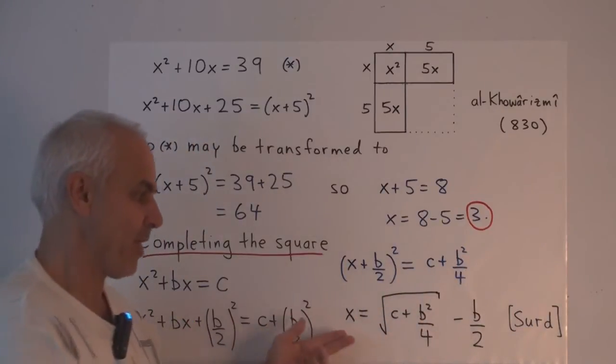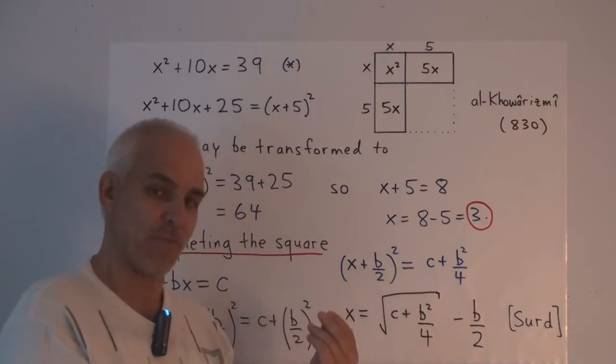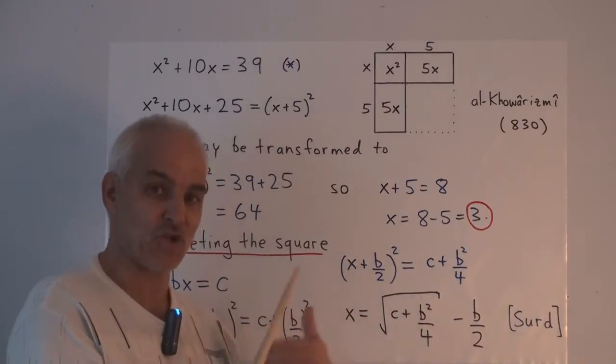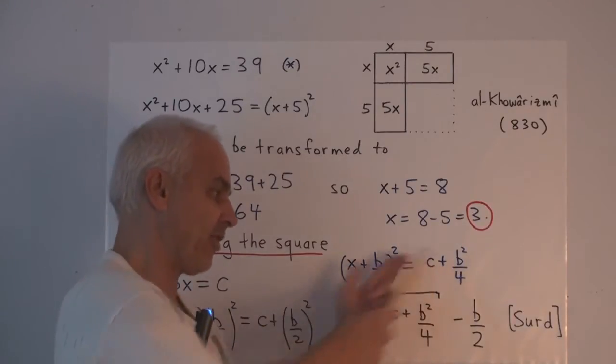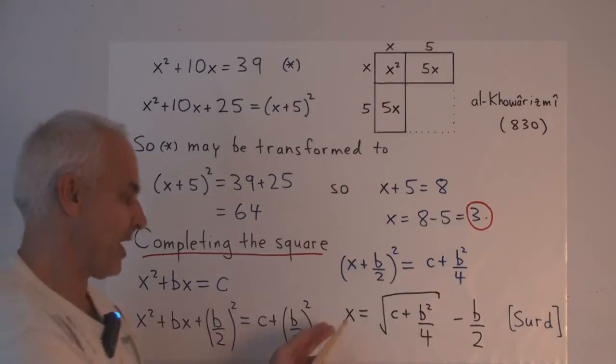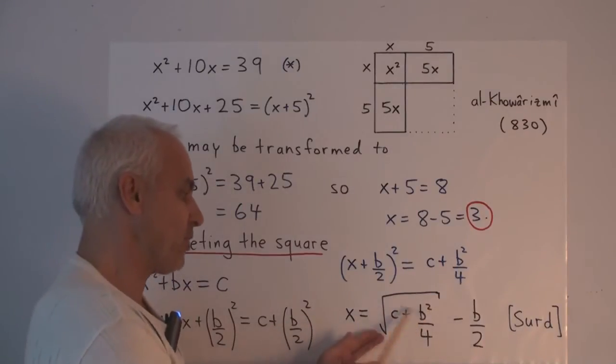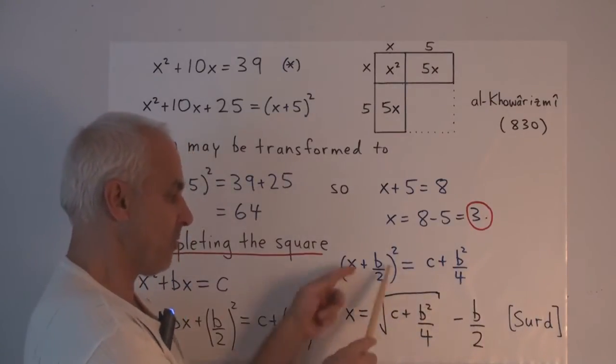We're introducing a new terminology: the idea of a square root, a number whose square is this. So we end up getting x equals the square root of c plus b squared over 4, minus b over 2, because the b over 2 comes around to the other side.